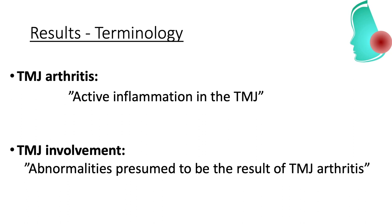The term TMJ involvement is intended for clinical situations in which no contrast-enhanced MRI verification of active TMJ inflammation has occurred, but where signs, symptoms, and radiological findings suggest the presence of former or active TMJ arthritis. It can also be used in patients with no current MRI evidence of active inflammation, but with abnormalities indicating previous TMJ arthritis.